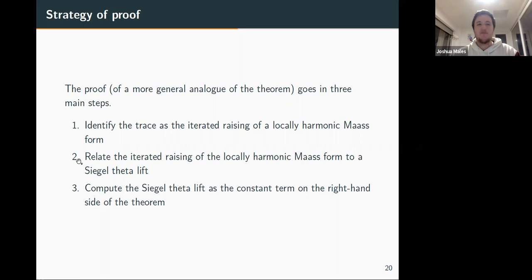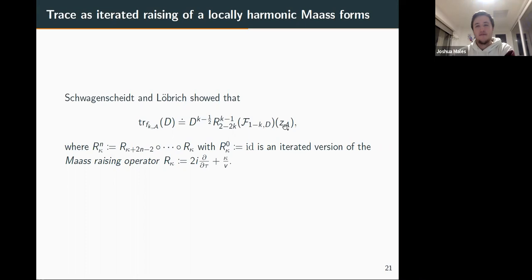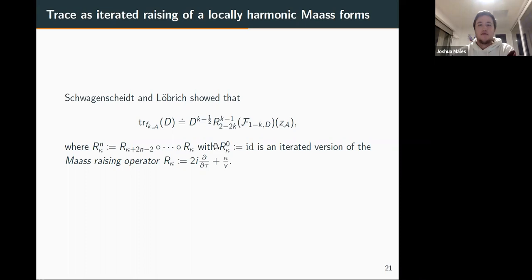The proof of the main theorem goes in three main steps. First, identify the trace on the left-hand side as the iterated raising of a locally harmonic Maass form — specifically the iterated raising of curly f_{1-k,d} gives the trace. Second, relate this output to a Siegel theta lift. Third, compute the theta lift as the constant term appearing on the right-hand side. Step one is essentially already known by work of Stefan Loebrich and Markus Schwagenscheidt.